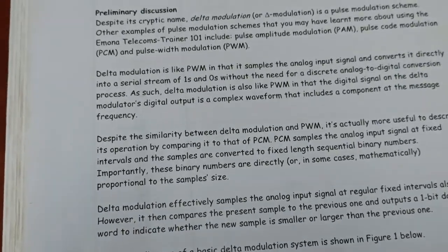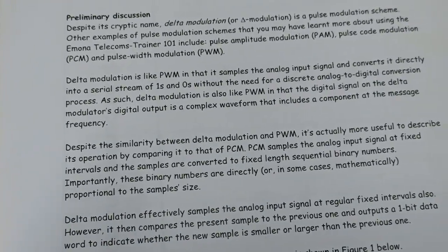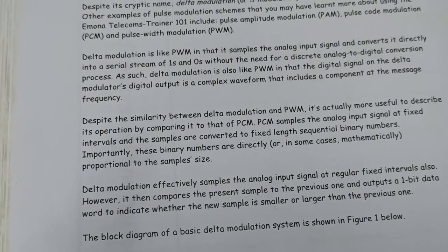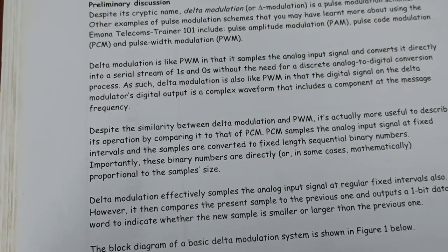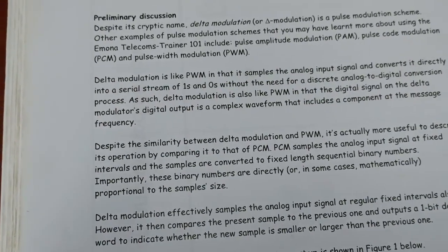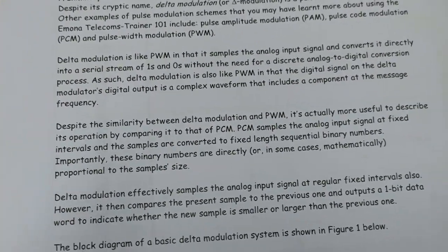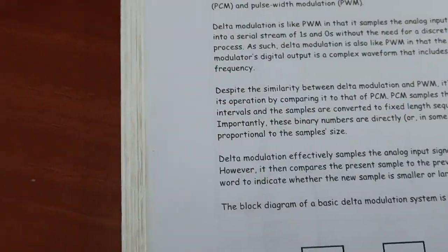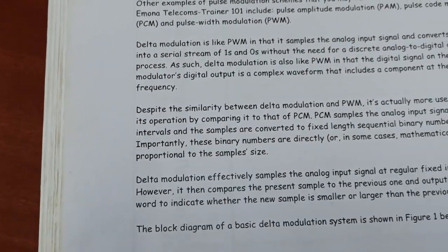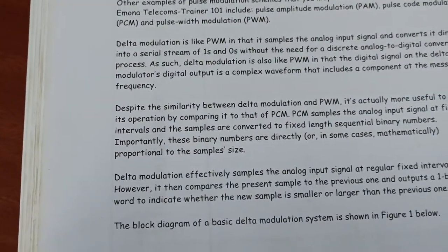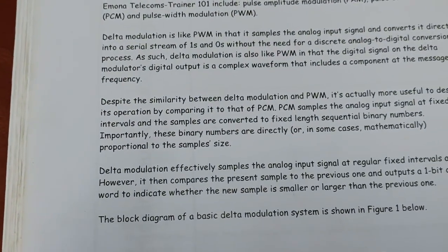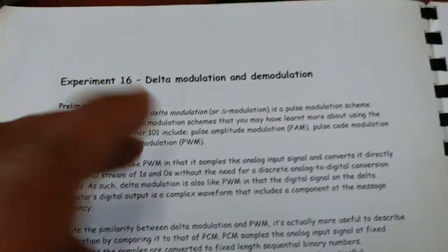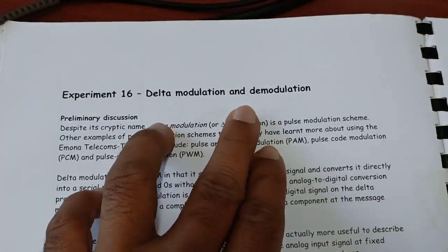Hello everyone, welcome to the class of digital communication lab. In the last lab we have seen the TDM encoding and decoding experiment. Today we will see the fourth experiment, which is delta modulation and demodulation.